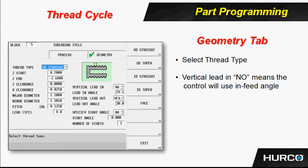Specifying a start angle means if I have a specific degree called out on the print where I need to start this thread in relationship to some other feature on the part, I can set 'specify start angle' to yes. That gives me the ability to put almost a C-axis angle in that field where it would start. The number of starts covers a single lead thread, double lead thread, quad lead thread, and so forth.